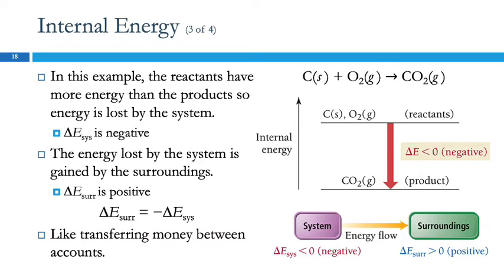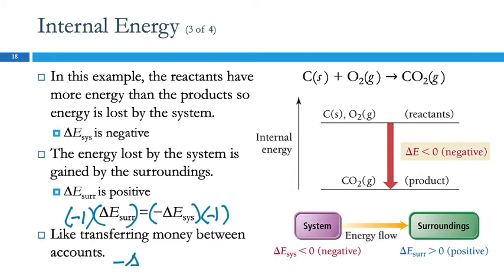When we look at an equation like delta E surroundings equals negative delta E system, this does not mean that E system is negative — it means they are opposite in sign. If I multiply both sides by negative one, I get negative delta E surroundings equals positive delta E system. Whatever the surroundings value is, if it's negative, the other one's positive; if it's positive, the other one's negative.